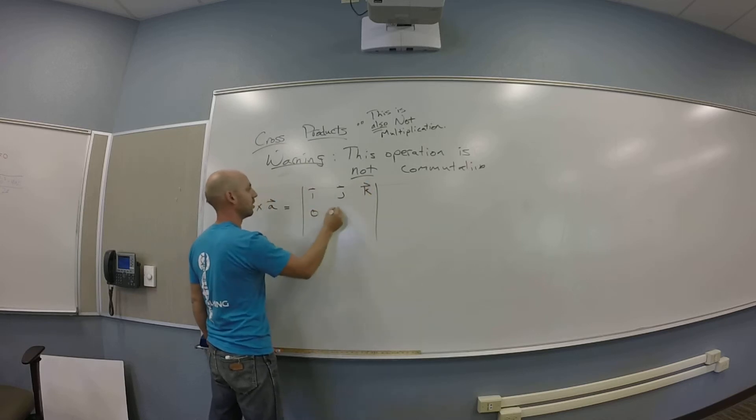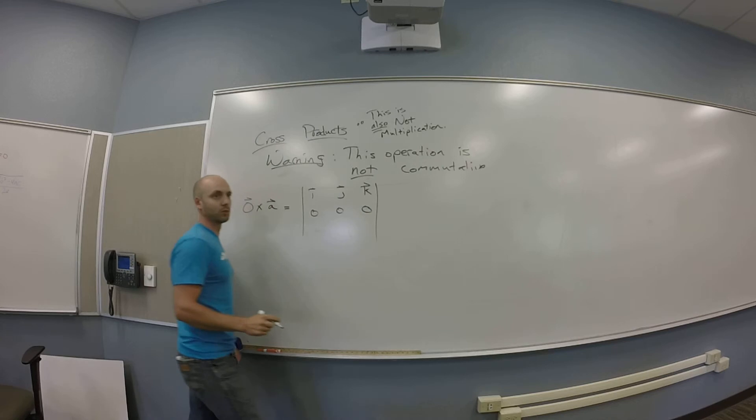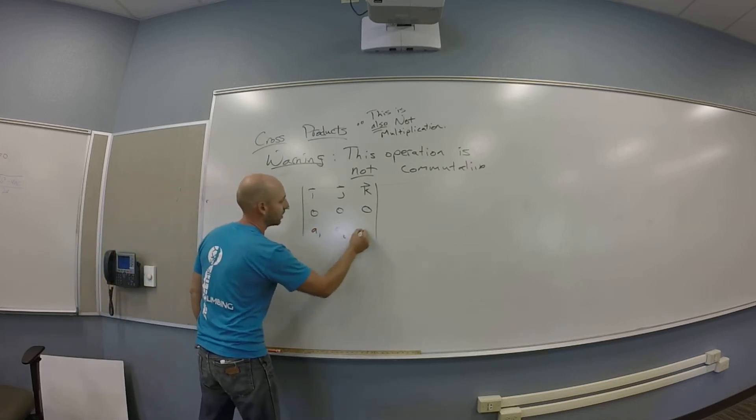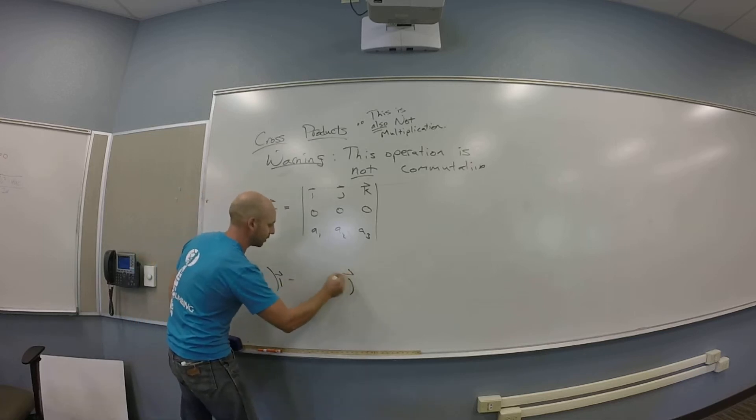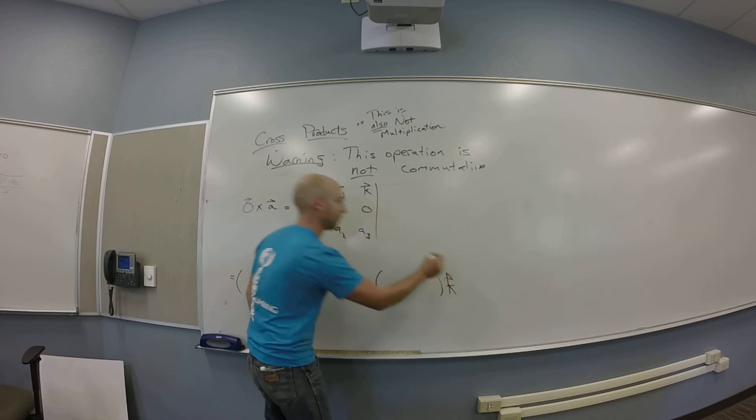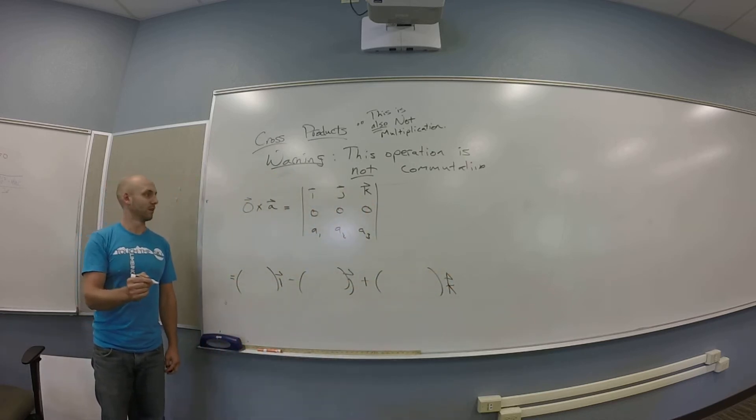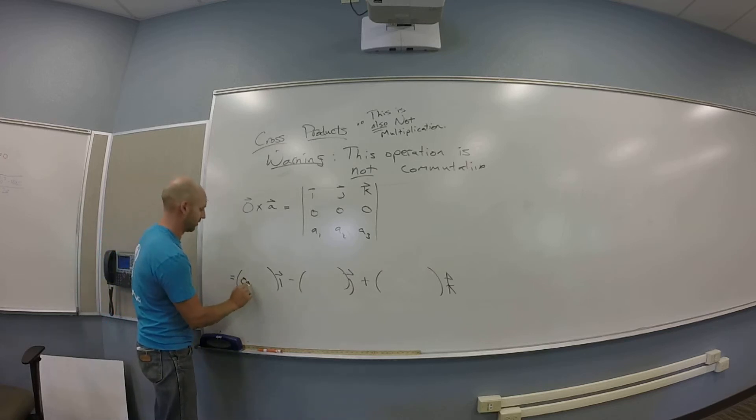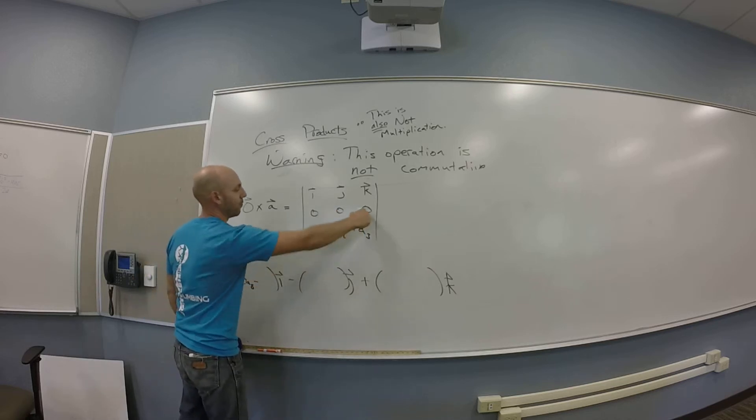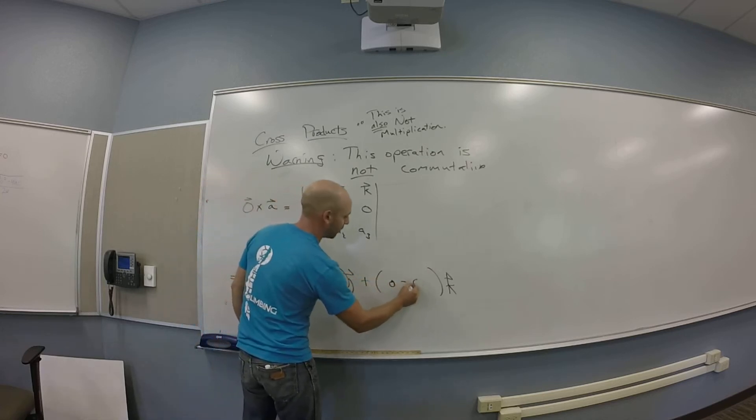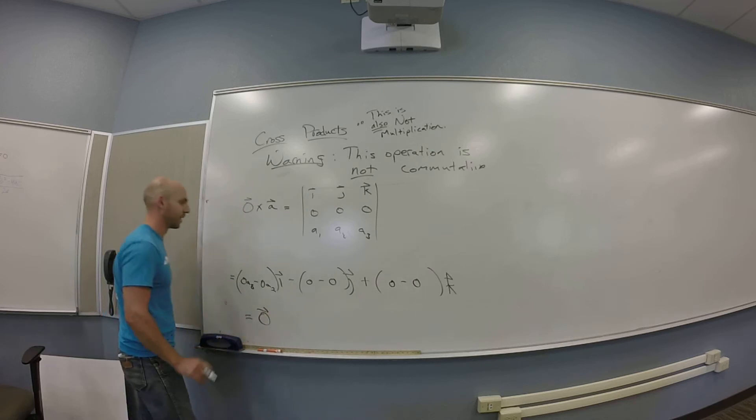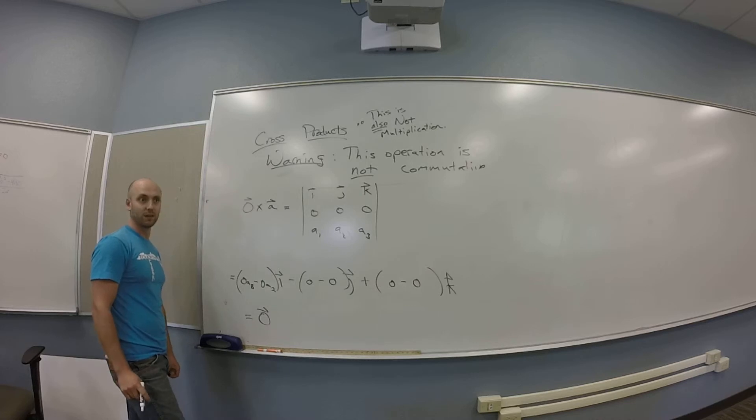Okay. So, you do I, J, K, zero, zero, zero. What goes in my third row? A1, A2, A3. Good. A1, A2, A3. And so, you get some stuff on an I minus some stuff on a J plus some stuff on a K, right? So, the stuff on the I is zero times A3 minus zero times A2. So, I got zero A3 minus zero A2. Here, I got zero A3 minus zero A1. Zero minus zero again? Yep. And in this case? Zero minus zero. Okay. So, I got the zero vector. Yep. You guys all see that? Whatever the heck the cross product does, when you do it with zero, you get zero.